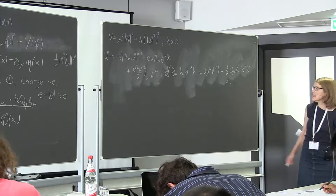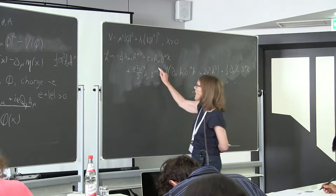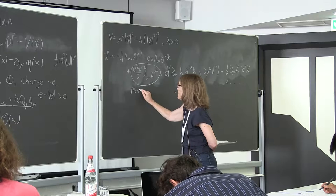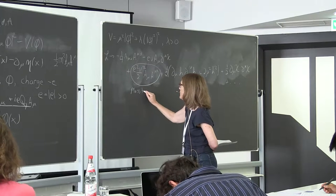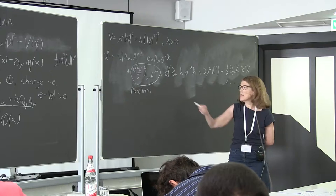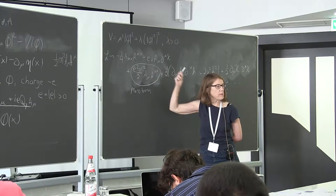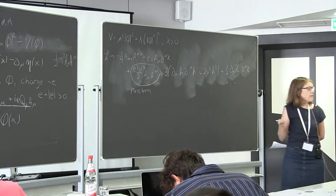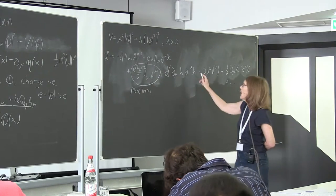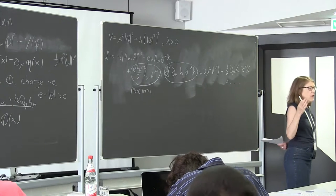We have a mass term for the gauge boson. The mass term is proportional to v, the minimum of the potential — so if there's no non-zero v, there's no mass term. I also have a kinetic energy term for the h field, this Higgs field, so it's a physical propagating field.